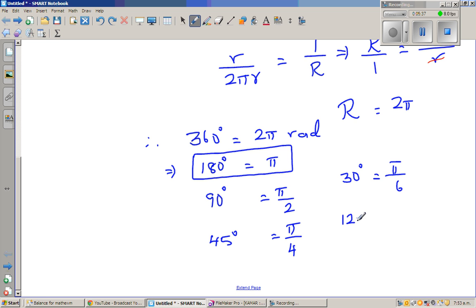So 120 degree. If π by 6, 30 degree is π by 6, 120 is 4 times π by 6, which is 4π by 3.